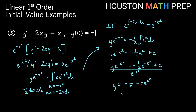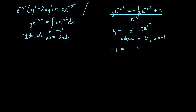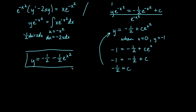Now we use our condition: when x is 0, y is negative 1. Plugging in: negative 1 equals negative one half plus c e to the 0, which is just c. Adding one half to both sides gives negative one half equals c. Substituting back into our general solution gives y equals negative one half minus one half e to the x squared. You could factor out the one half if you like, but we'll leave it there.